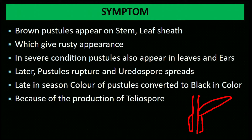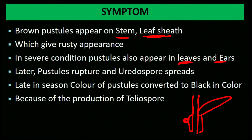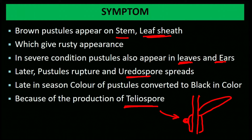Reddish-brown colored pustules form, giving a rusty appearance. In severe conditions, pustules also appear on leaves and ears. Later these pustules rupture and uredospores come out. When wheat reaches harvesting stage, black-colored teliospores form within these pustules, converting the reddish-brown pustules to black. Pustules are different from spots — pustules are raised structures because spores accumulate and push up the surface layer.